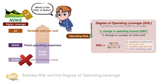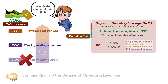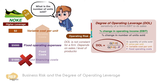Now why don't you pause for a moment and calculate the DOL for NOKEY using this formula? If you've attempted it, you'll probably notice that you cannot calculate it because you do not know what the quantity of units sold is. Through this, we learn that the DOL of a firm is not constant and depends on the quantity of units sold, or the level of production the company is at.